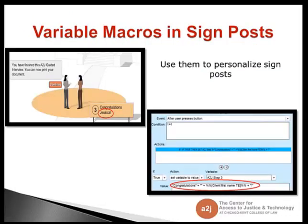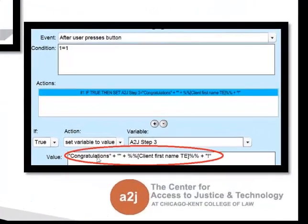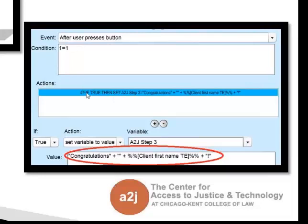Another way is in signposts. You can use variable macros to personalize the signposts. In the interview I created for today's training I only had three signposts. Here we're at the end, in front of the courthouse, ready to print our documents. I wanted to personalize it further for the end user, so I included a variable macro: congratulations, plus their name, the client's name, plus an exclamation point. To do this, you go to the advanced tab on the last question, create a condition where 1 equals 1 — that's always going to be true — so A to J author always sets the variable A to J step 3, which is this signpost, to that value: congratulations, space, client's name, exclamation point.